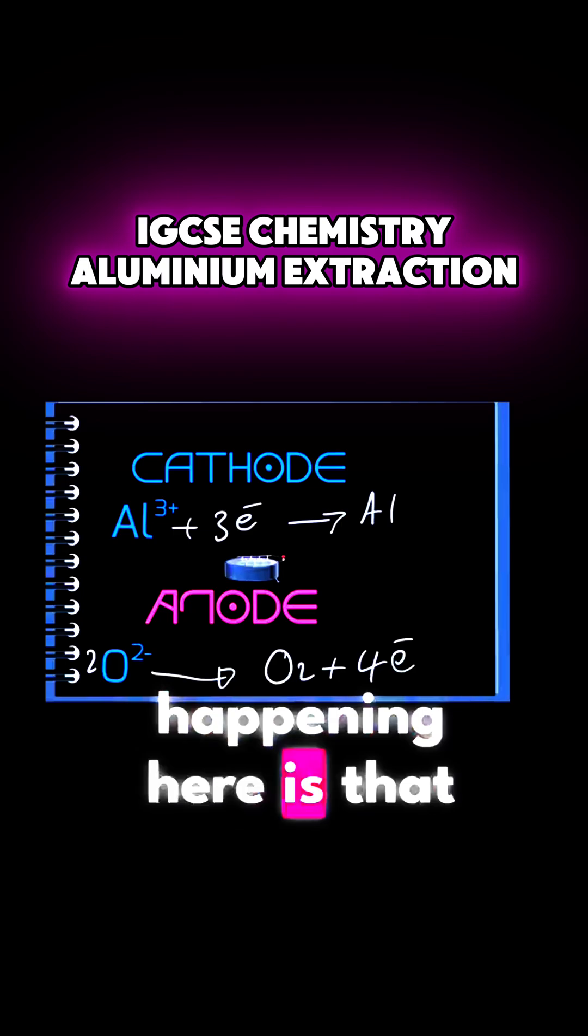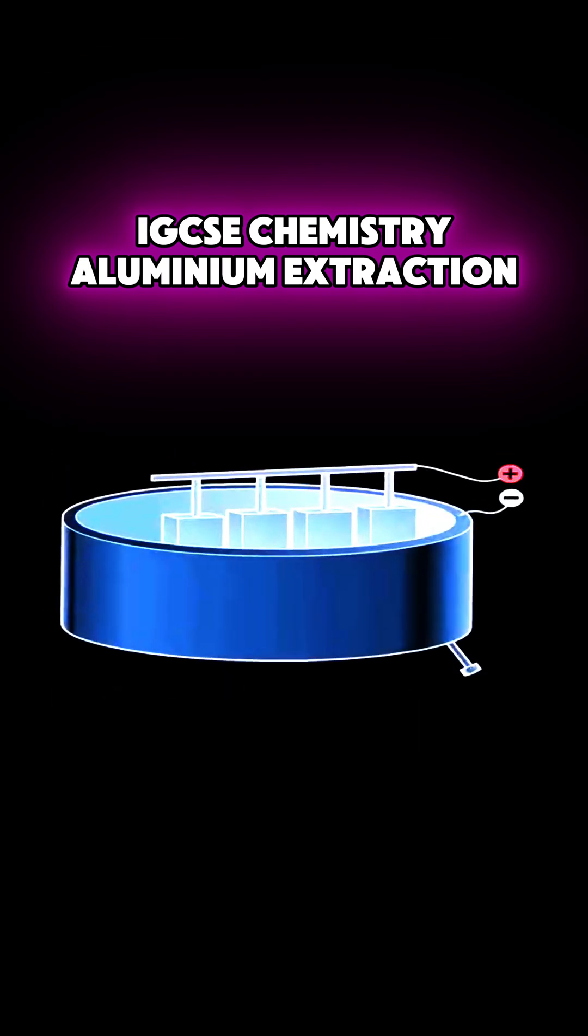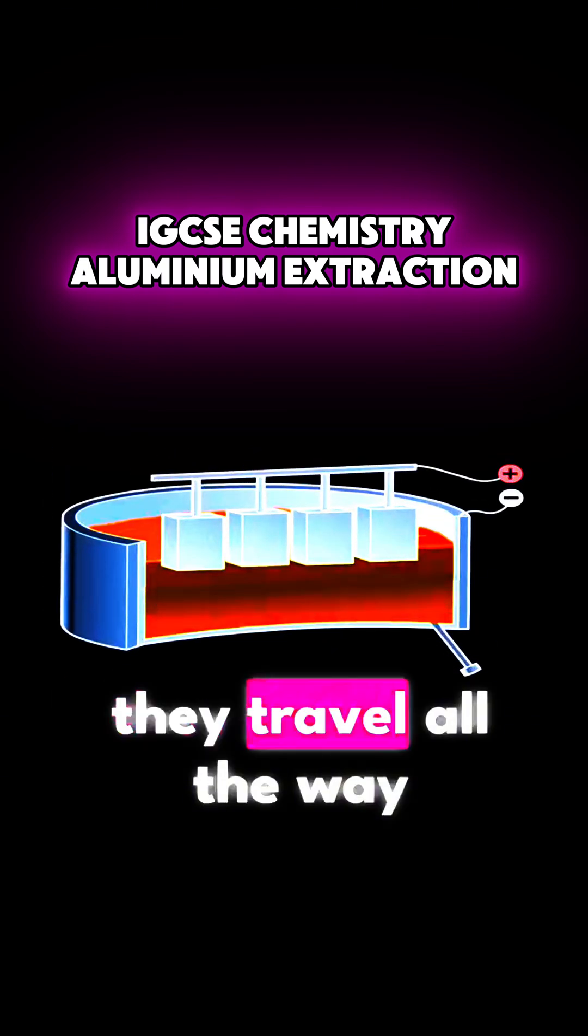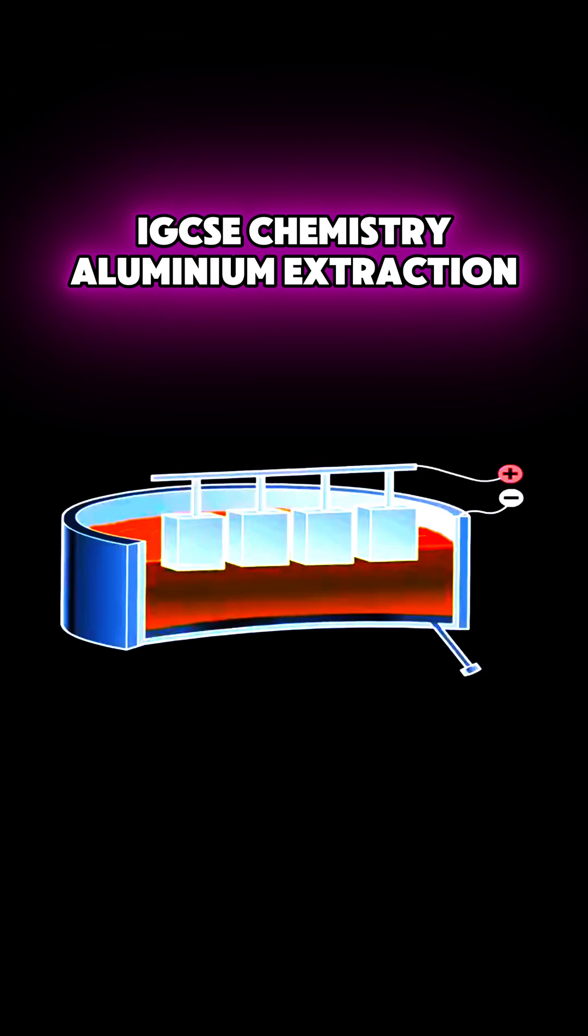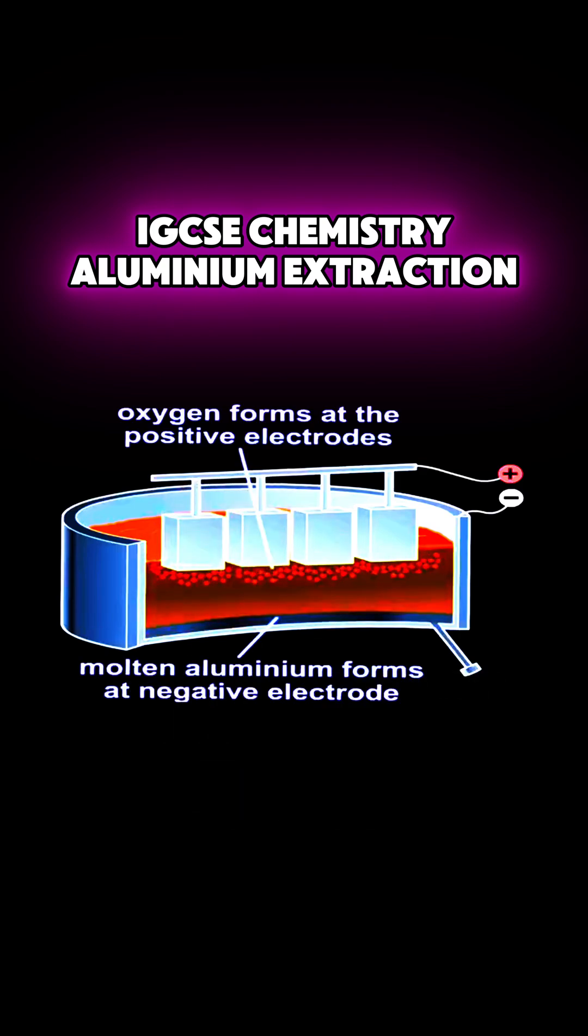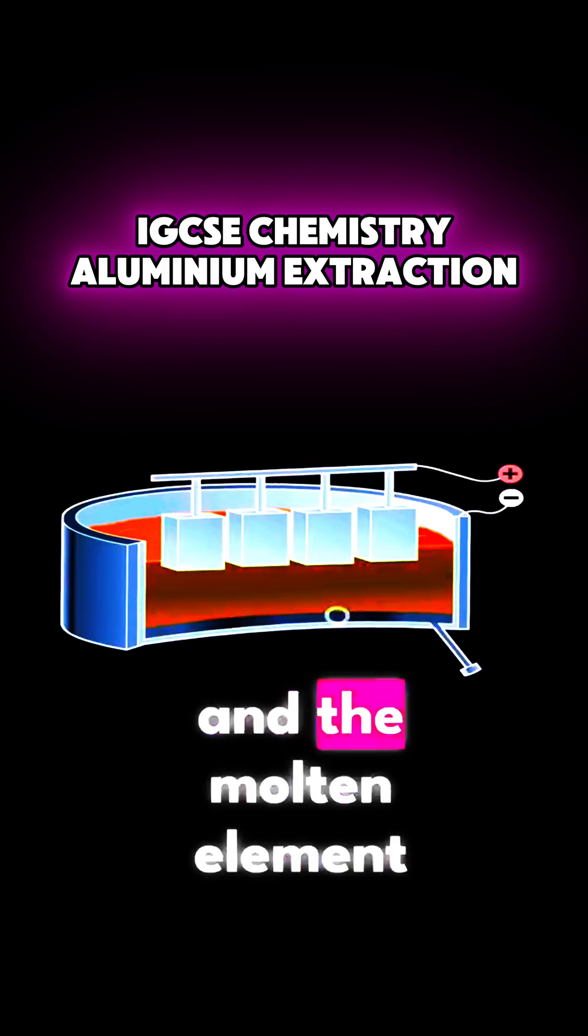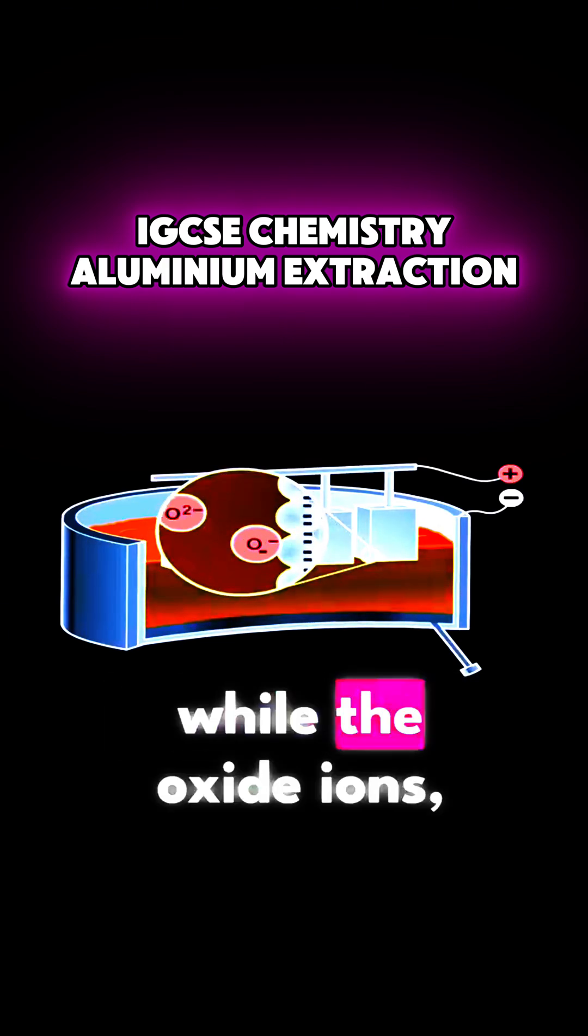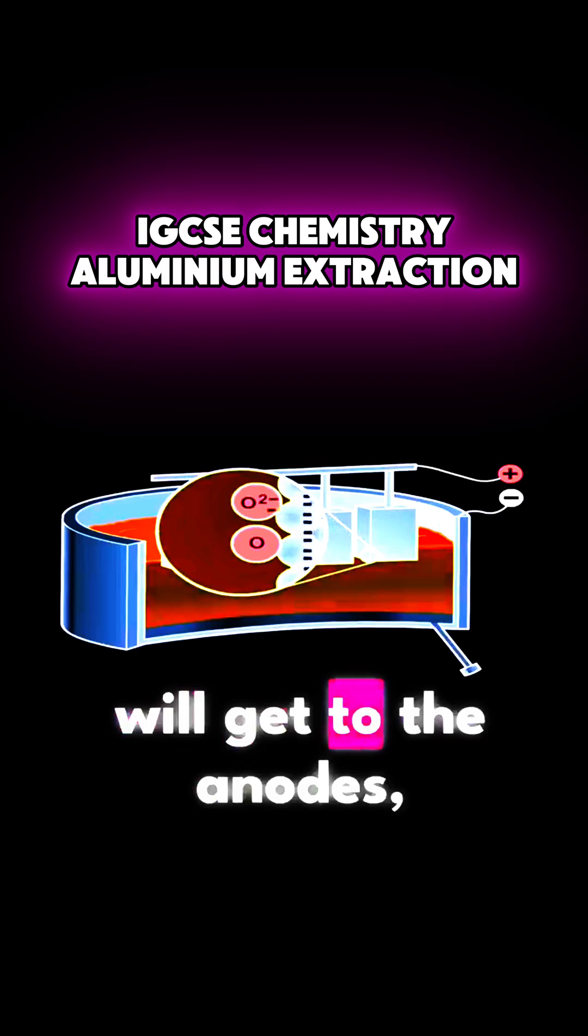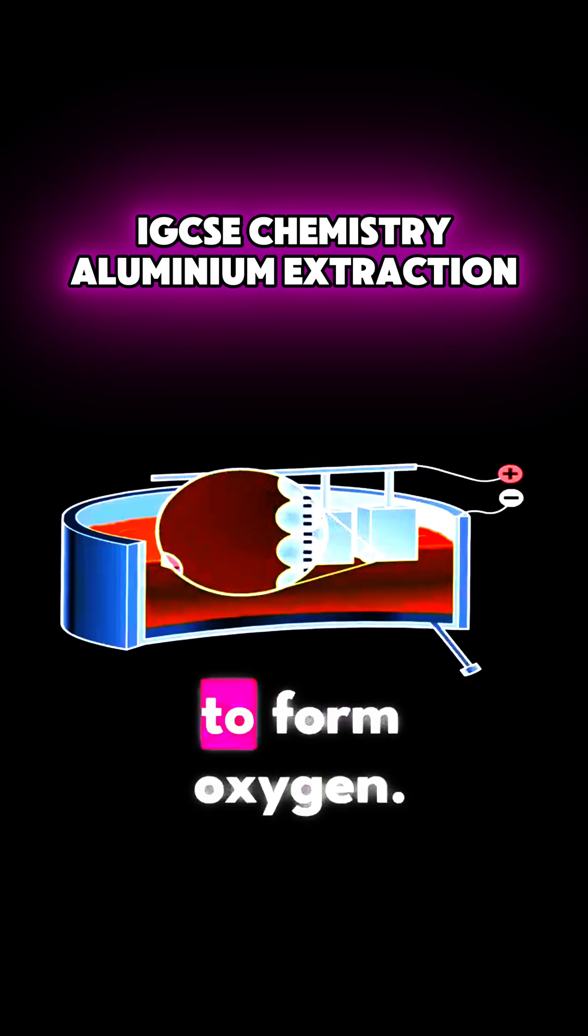The overall chemistry happening here is that the aluminium ions, those are the positive ions, they travel all the way to the bottom. This is where they get reduced, and you would form the aluminium metal there at the bottom side. And the molten aluminium will be poured from the bottom side, while the oxide ions, they will get to the anodes. They will lose electrons to form oxygen.